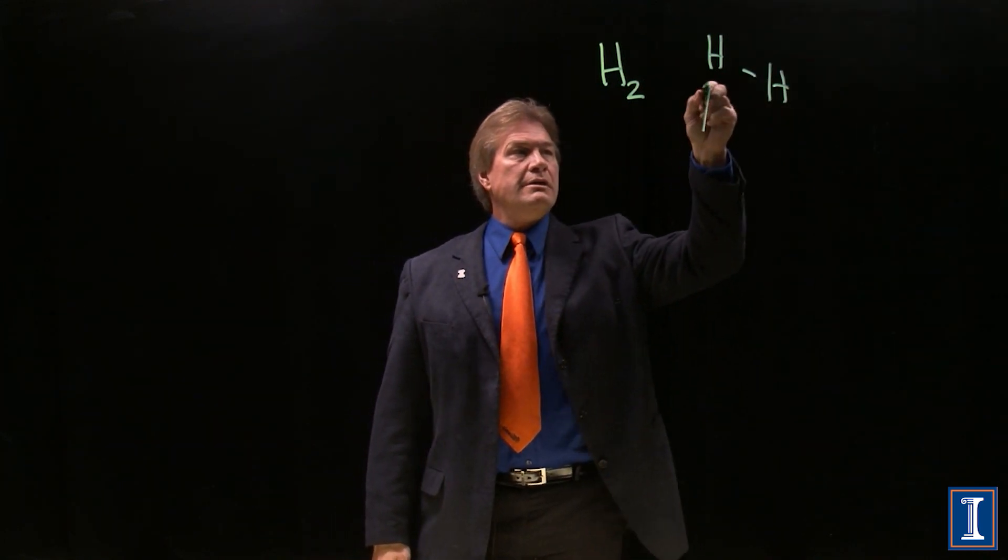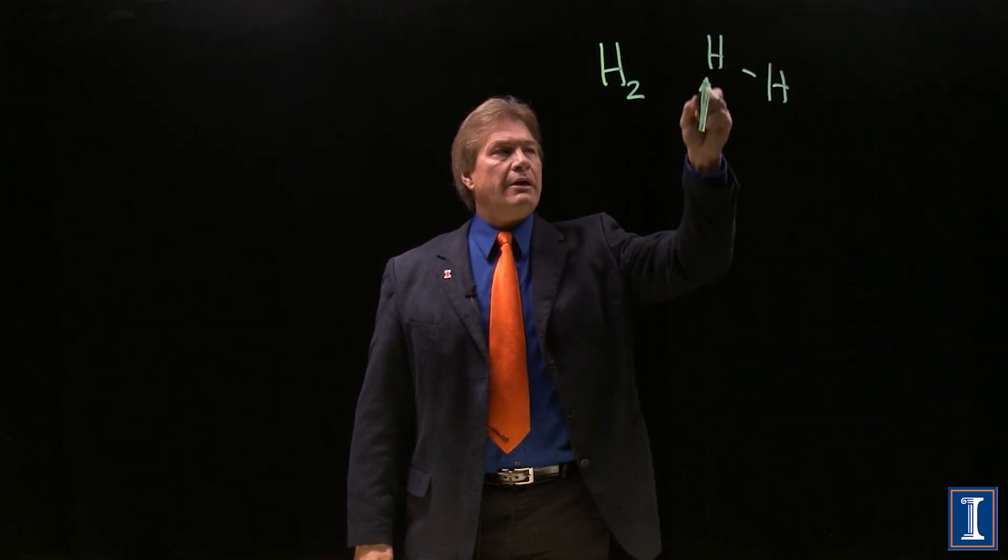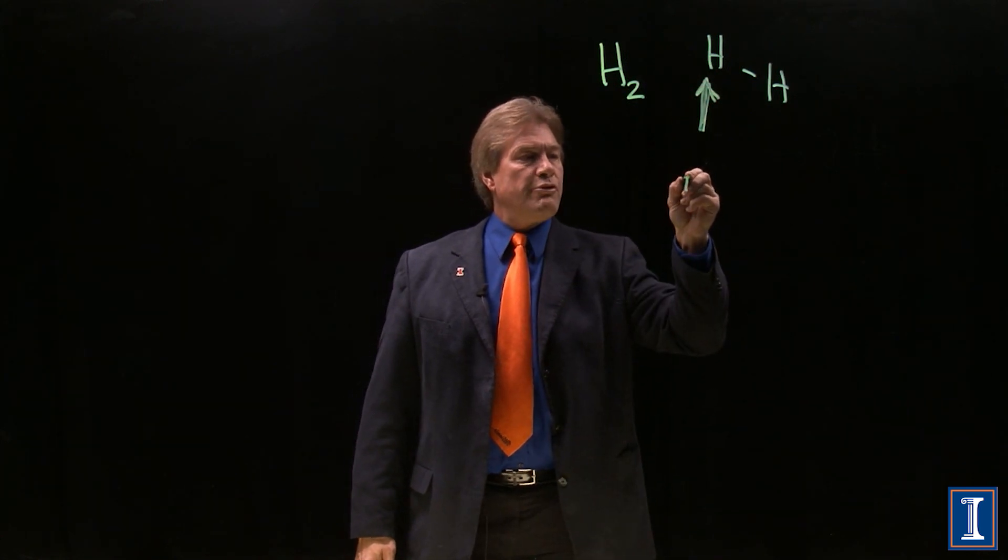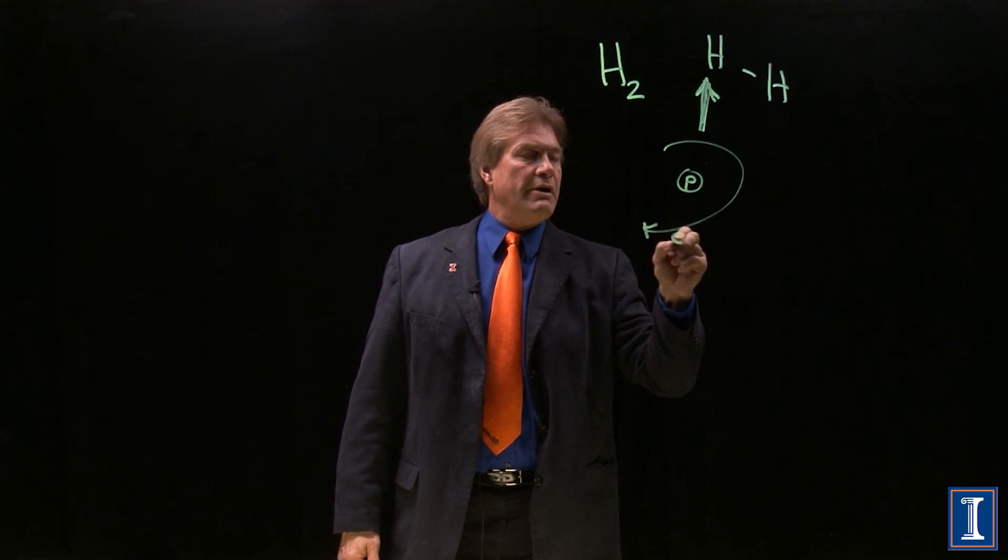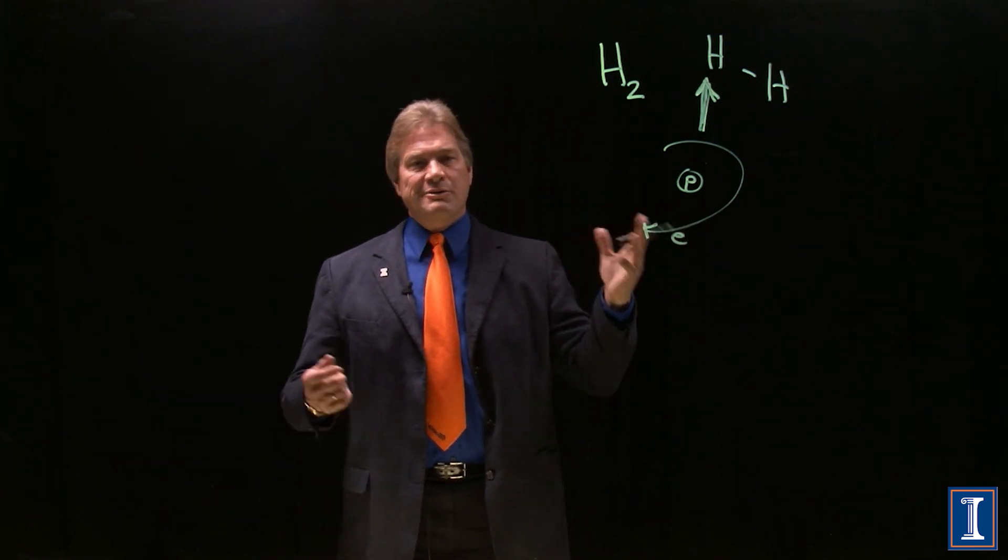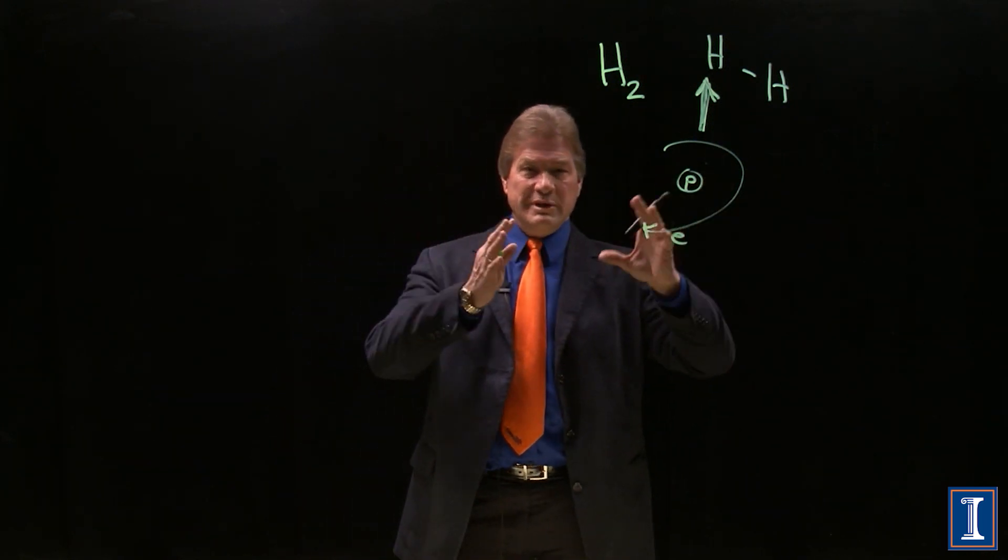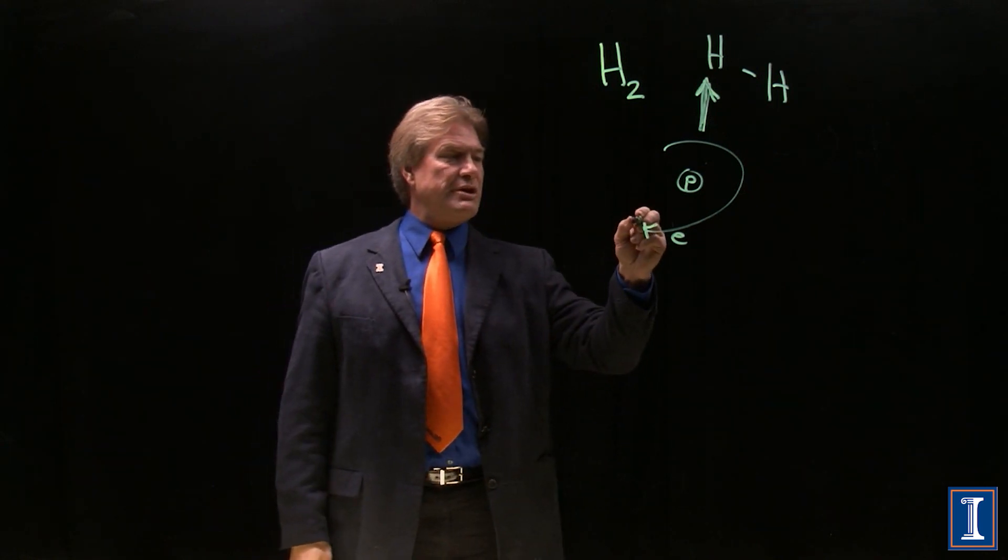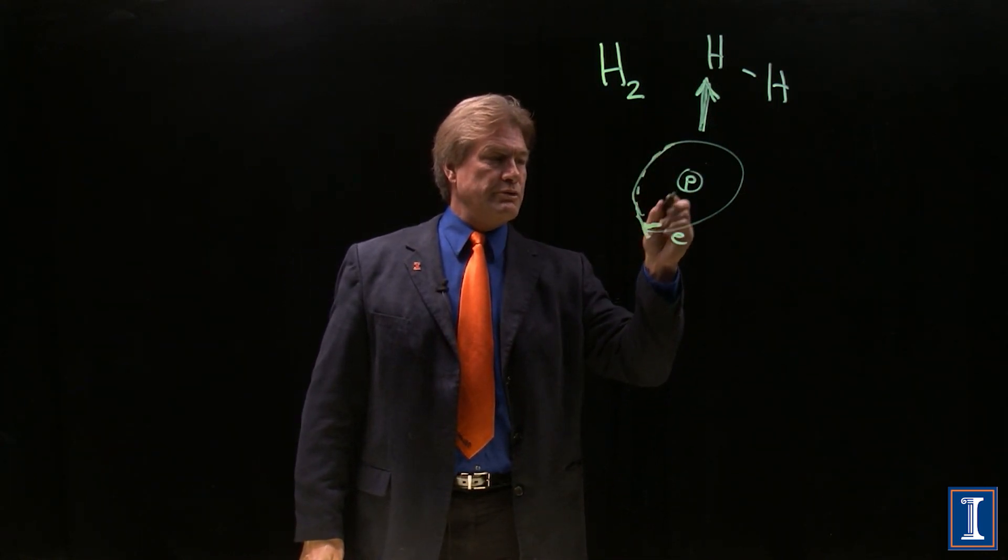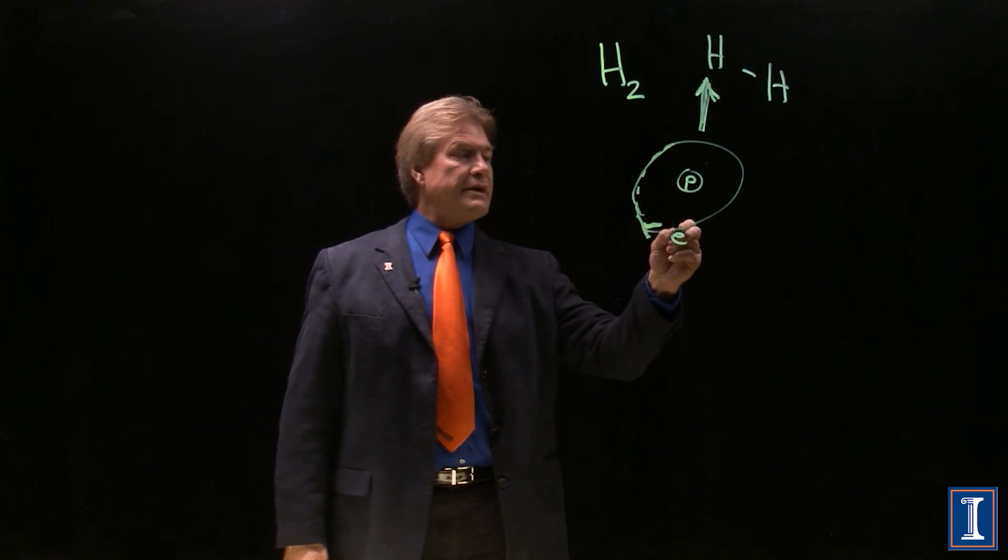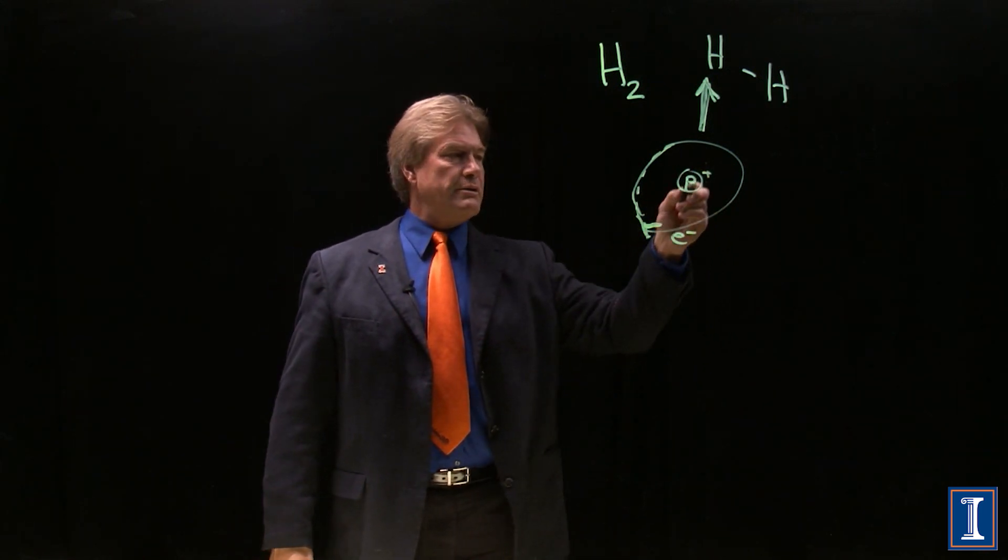But remember, in an individual atom, it has a proton, and it's got some electrons going around it. They don't really go in circles. There really is a probability distribution around there. But generally, we've got electrons orbiting a nucleus. And this is hydrogen. One proton, one electron.